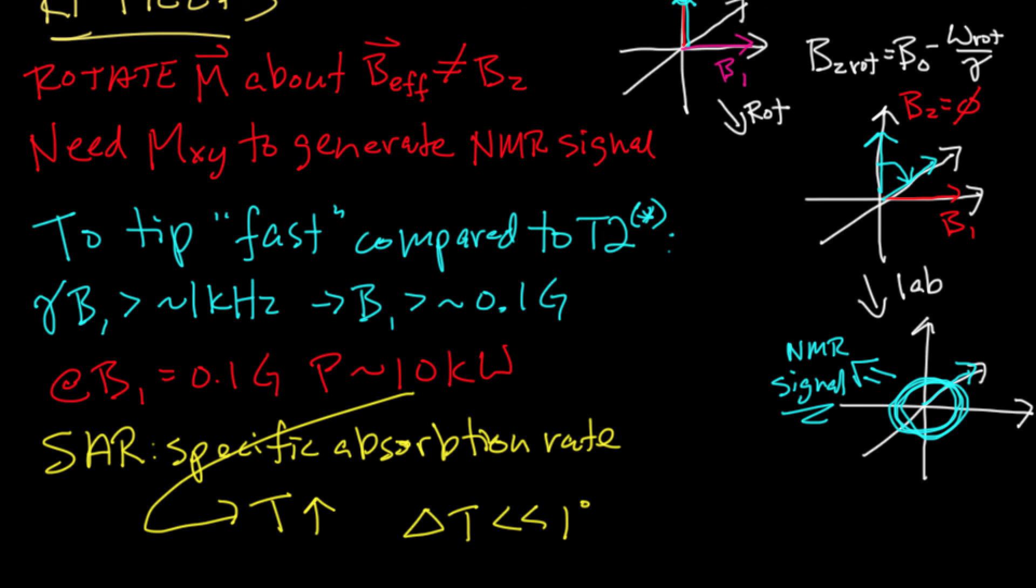The geometry of the coils that make the B1 fields are very much complementary to those of the gradient coils. In that for gradient coils, the only component of field that matters is the z component field. For RF pulses, the only component of the magnetic field that matters is the transverse components. So typical geometry of an RF coil that produces RF pulses is something like this, and as you can see, the primary magnetic field component that it generates will be transverse.